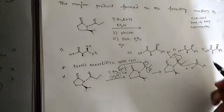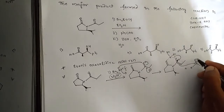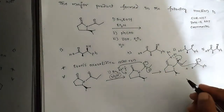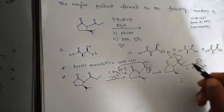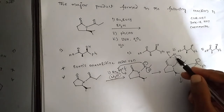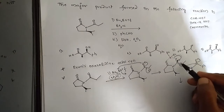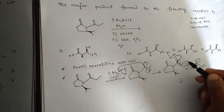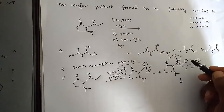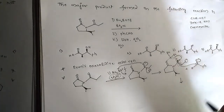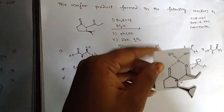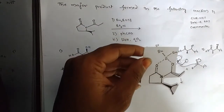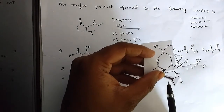Now we have two chances. When this double bond comes in, it becomes a single bond. The methyl group has the chance to rotate upside or downside. I'm showing this with a simple paper model.